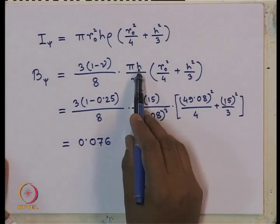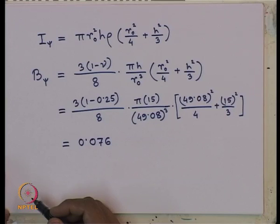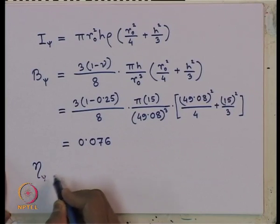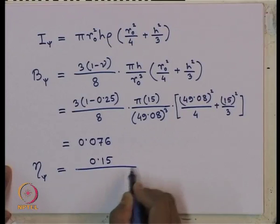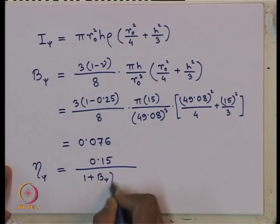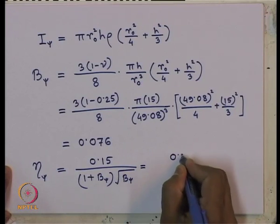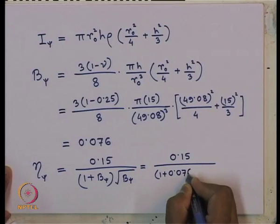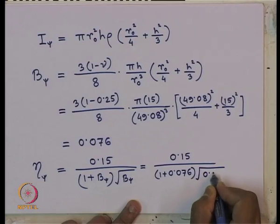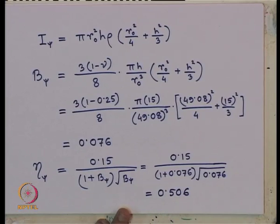The damping ratio for rocking mode is: η_ψ = 0.15 / [(1 + B_ψ) √B_ψ]. Substituting B_ψ = 0.076: η_ψ = 0.15 / [(1 + 0.076) × √0.076] = 0.506. This damping ratio is also constant for all three soil types.